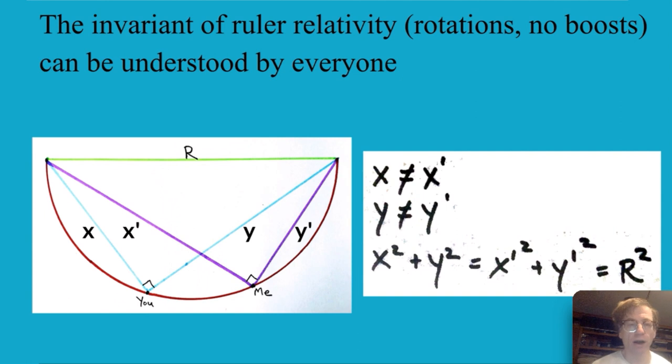Returning to my talk, the invariant of ruler relativity, this is the most simple form of relativity where there's rotations and no boost, I think can be understood by almost everyone going back to the Egyptians because they were looking at the same thing and they were located in different places so their x measurement would be different from my x measurement and y's would be different but if we squared them then we would agree on the distance R and we are looking at exactly the same thing so we've got our invariance.